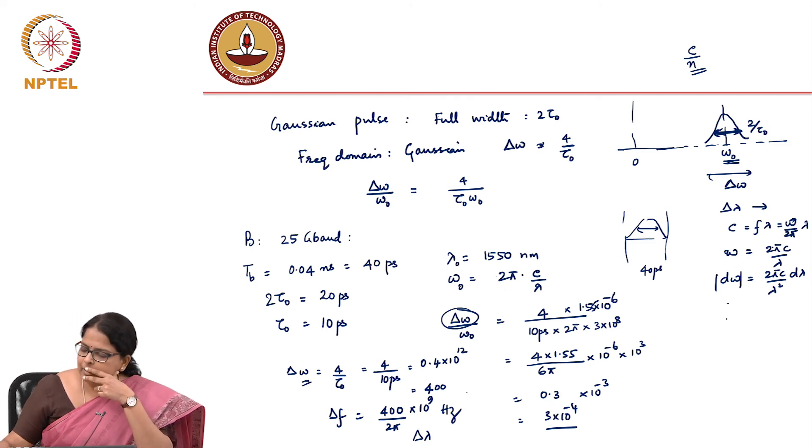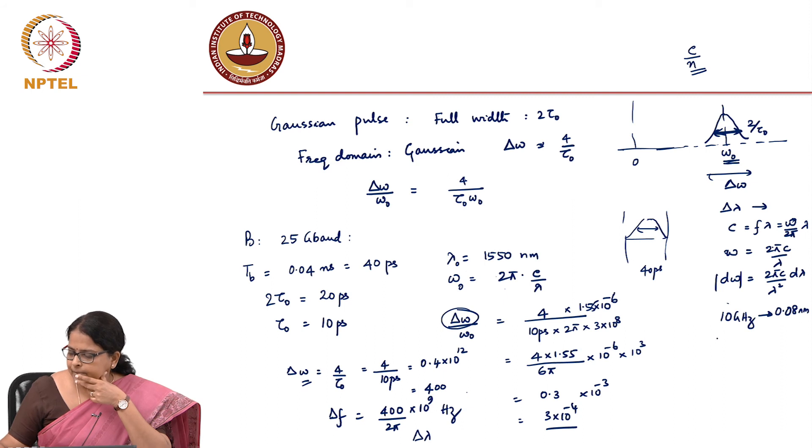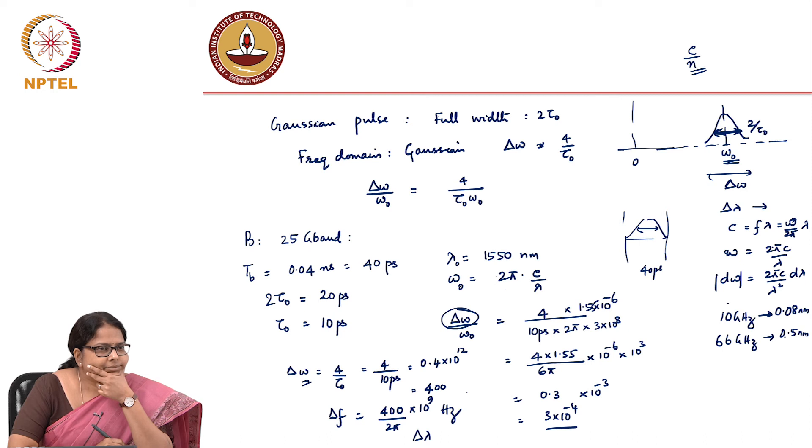So, this is something useful number 10 gigahertz at 1550. If I do this calculation is 0.08 nanometer. So, roughly about 66 gigahertz would be or 70 gigahertz, if I say 7 times more than this. Check for yourself. Numbers, exact numbers could be slightly different.